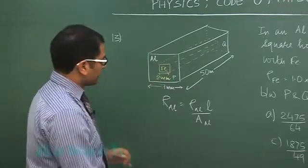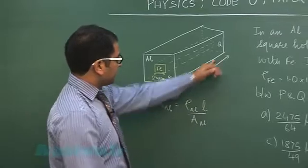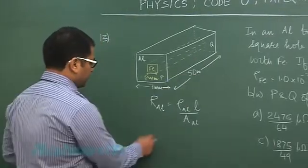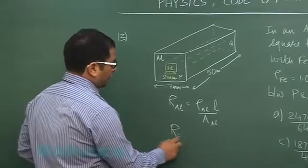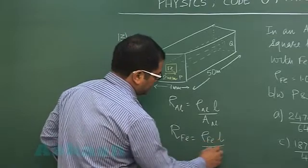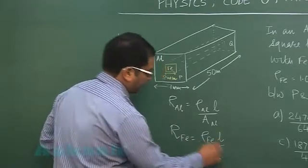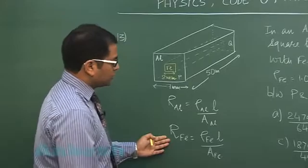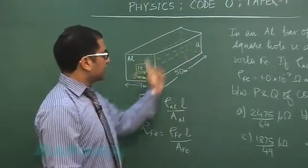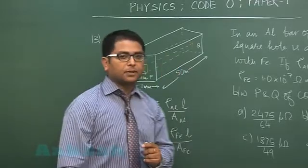Similarly, resistance of iron would be rho of iron times length by area of iron.